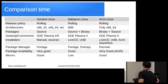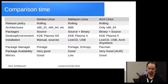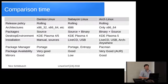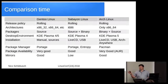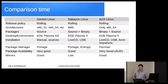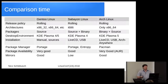Regarding architectures: Gentoo — I've used 32-bit and 64-bit, but they can support pretty much any architecture you name, whether it's ARM, RISC, SPARC. The reason for that is all the packages are compiled from source on the host machine. Sabayon Linux only supports i686 as well. Arch Linux only supports 64-bit — they dropped 32-bit support last year.